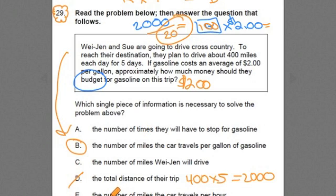The number of, some of these, you could eliminate because they're totally not necessary, like how many miles Wei-Jen drives, or the number of times they stop for gasoline. Not really essential. And this one right here, this is where I think some people might pick this, the number of miles the car travels per hour. It's tempting, but it's not the answer, it's not necessary. What we're missing here is the number of miles the car travels per gallon of gasoline.